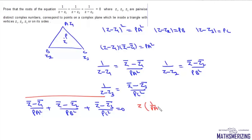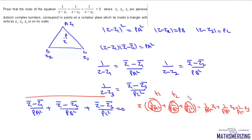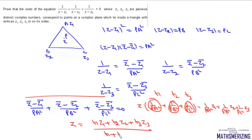Taking the conjugate, we write z times 1 upon PA squared plus 1 upon PB squared plus 1 upon PC squared equals 1 upon PA squared times z1 plus 1 upon PB squared times z2 plus 1 upon PC squared times z3. Setting t1 equals 1 upon PA squared, t2 equals 1 upon PB squared, t3 equals 1 upon PC squared, we get z equals t1 z1 plus t2 z2 plus t3 z3 upon t1 plus t2 plus t3.